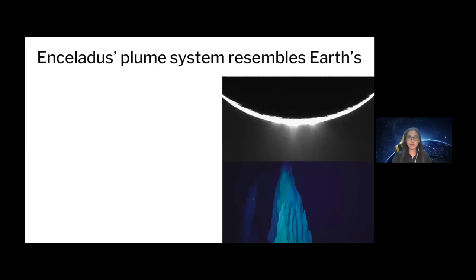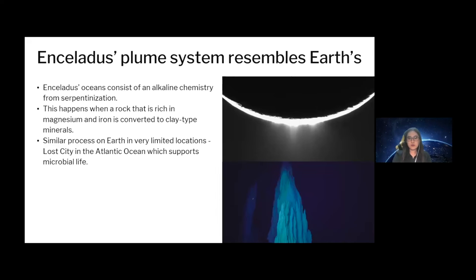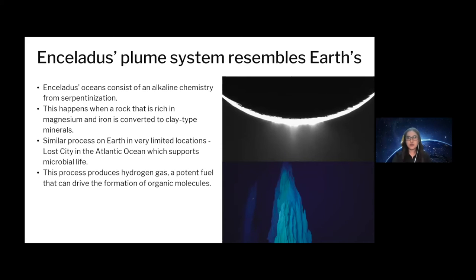One of the best examples is Saturn's icy moon Enceladus. Enceladus' ocean consists of an alkaline chemistry from serpentinization — a process where rock rich in magnesium and iron is converted to clay-type minerals. A similar process on Earth can be observed in very limited locations, for example the Lost City hydrothermal field in the Atlantic Ocean, which also contains hydrothermal vent-like structures that support microbial life. This process produces hydrogen gas, a potent fuel that can drive the formation of organic molecules that, in some cases, can be the building blocks of life.